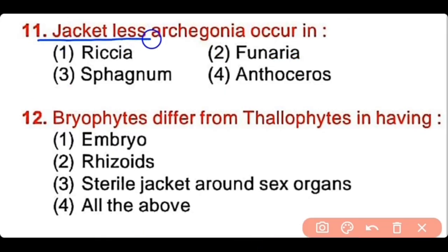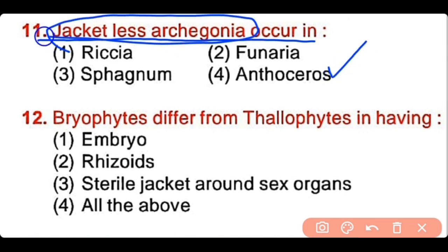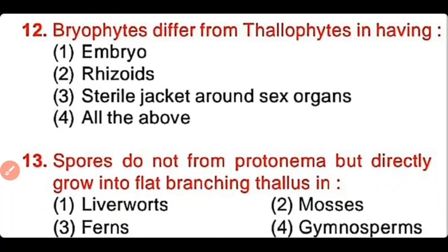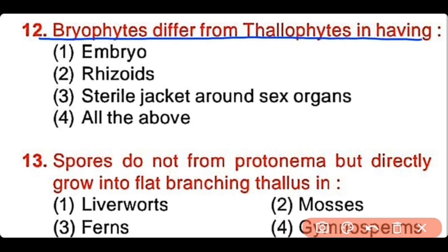Question number 11: Jacketless archegonia occur in Riccia, Funeria, Sphagnum, or Anthoceros. The correct answer is option 4 — Anthoceros has jacketless archegonia. Question number 12: Bryophytes differ from thallophytes in having embryo, rhizoids, or a sterile jacket around the sex organs. The correct answer is option 4. Bryophytes are different from thallophytes because bryophytes have an embryo, they also have rhizoids, and a sterile jacket around the sex organs.